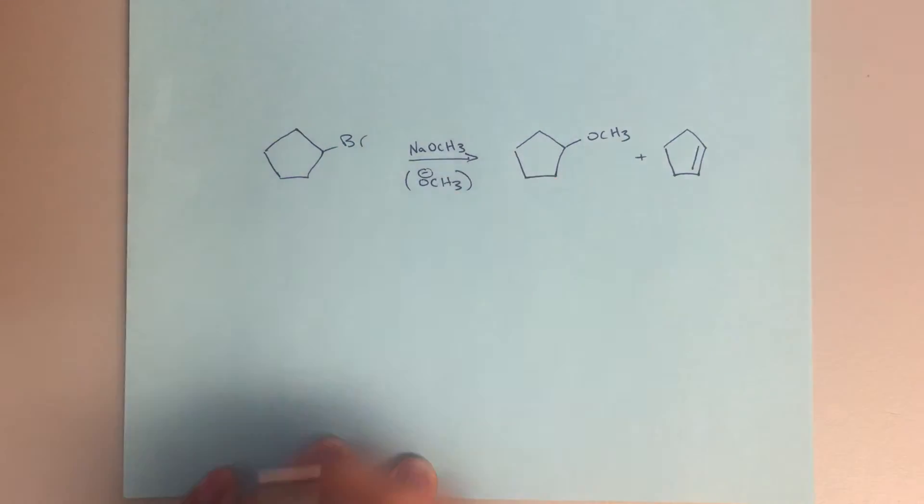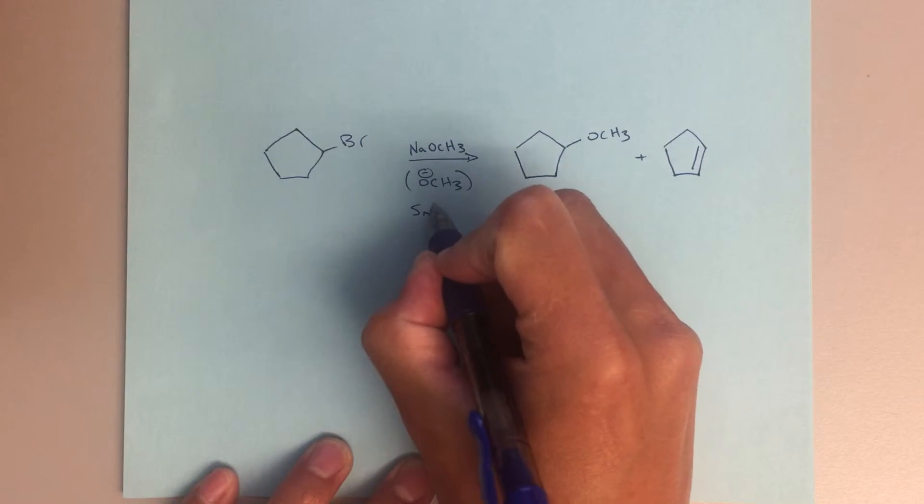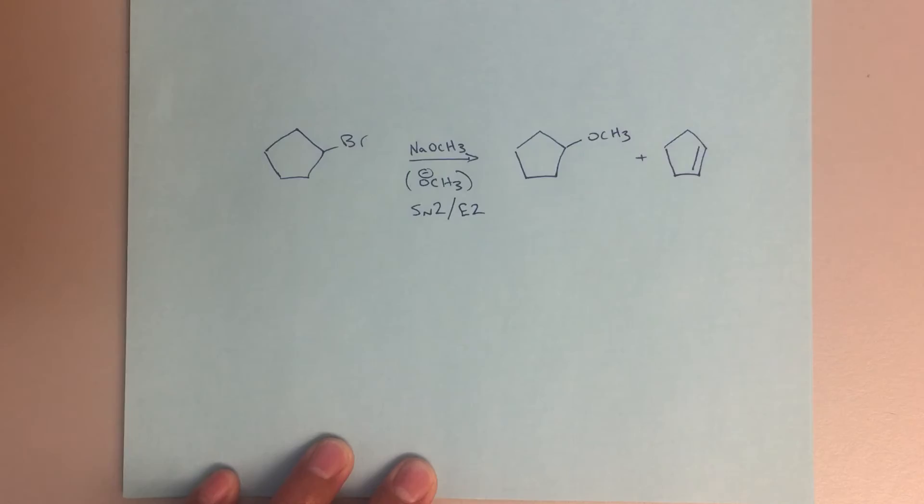If I see OCH3 minus, that is to me saying, well, this is probably going to be SN2 or E2, right? I've got a strong nucleophile here. That's going to be doing some attacking. That's going to be abstracting some protons. So right away, SN2, E2.